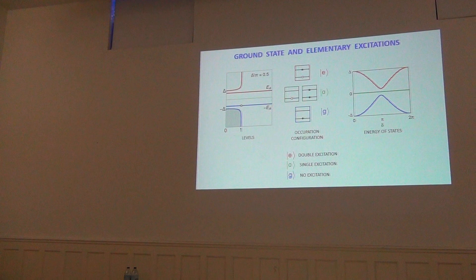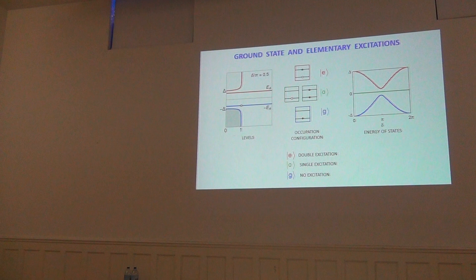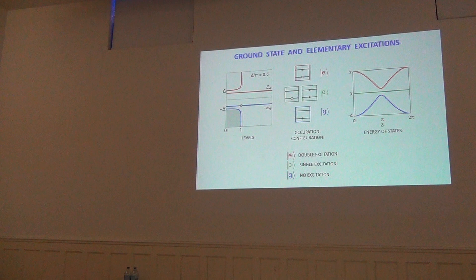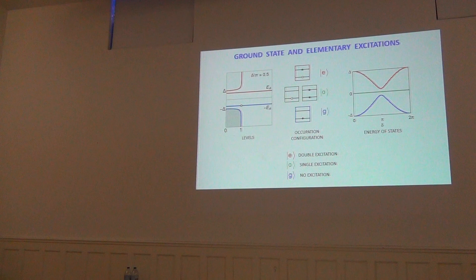To perform excitations of the system we need some technique to distinguish in which of these states the system resides. A student asks about the two excited states shown. Indeed, the Andreev states are spin-degenerate, so there are two odd states — one spin-up and one spin-down — because these are single quasiparticle states which carry spin.